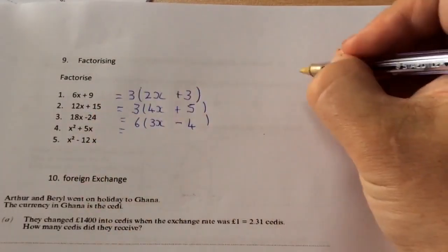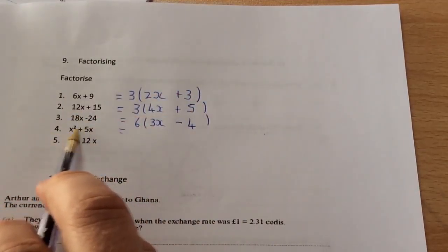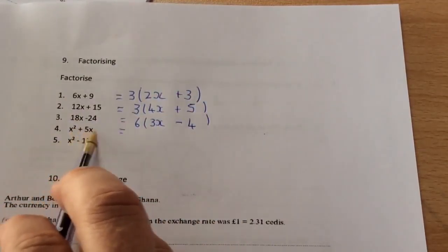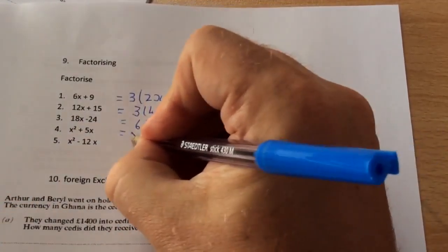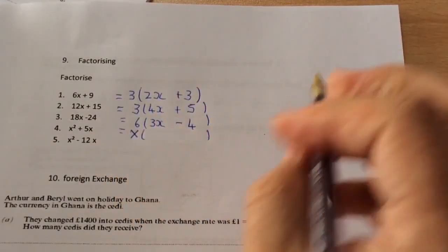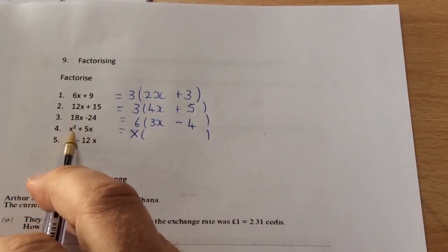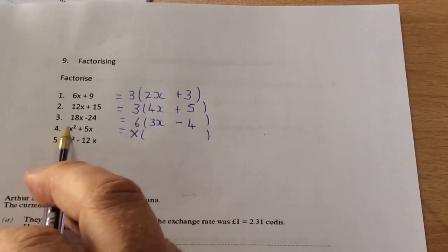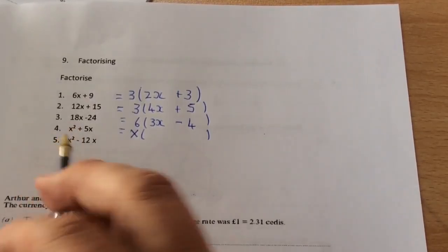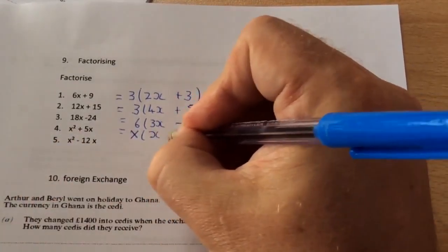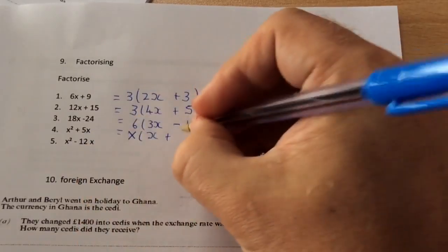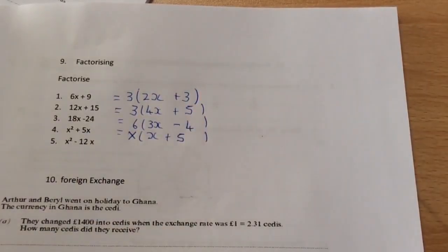The next one, I've got x squared and 5x. 1 is the highest number now, but there's also an x in both of them. So I can take an x out of both of them. How many x's in x squared? x squared means x multiplied by x, so I'm still left with an x. And how many x's in 5x? I've taken the x out, so I'm left with a 5.